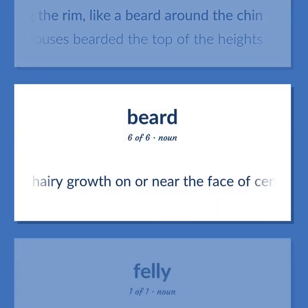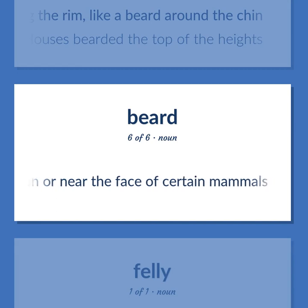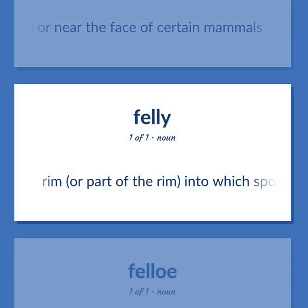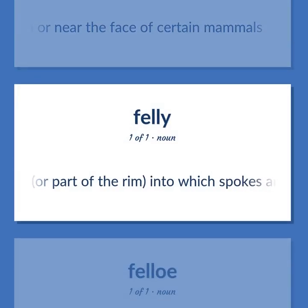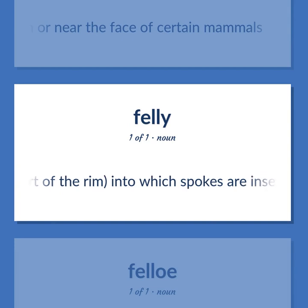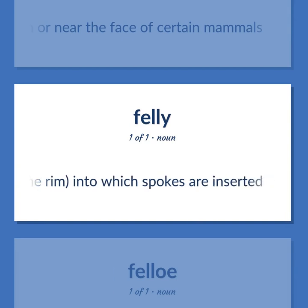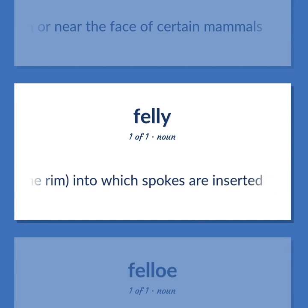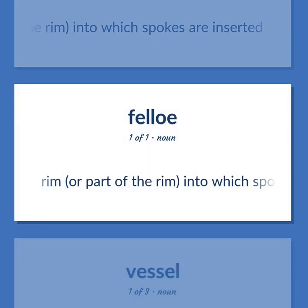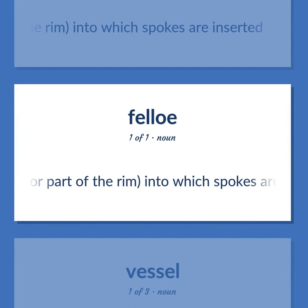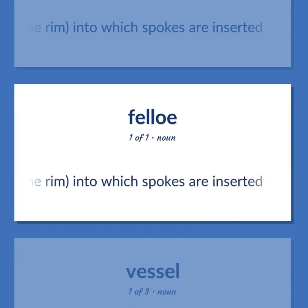BEARD (continued): Hairy growth on or near the face of certain mammals. FELLOE: Rim, or part of the rim, into which spokes are inserted.